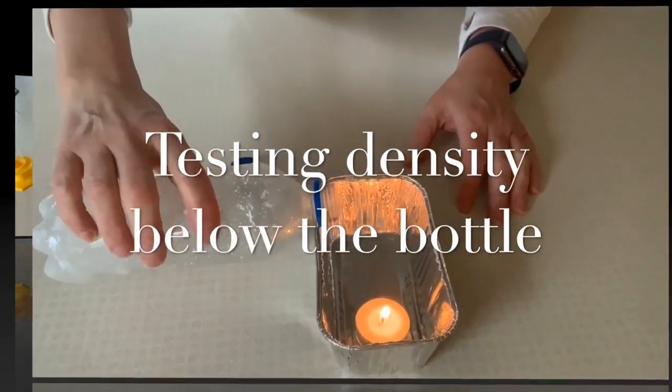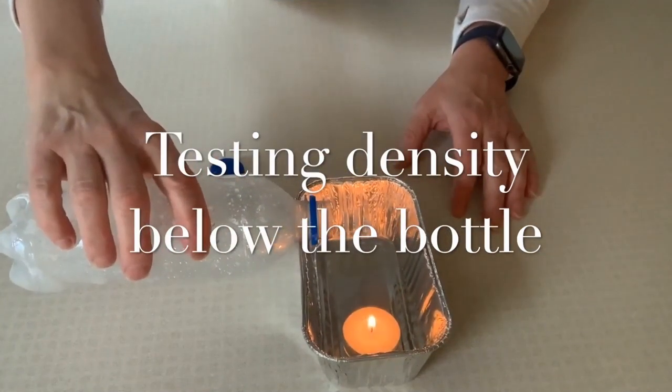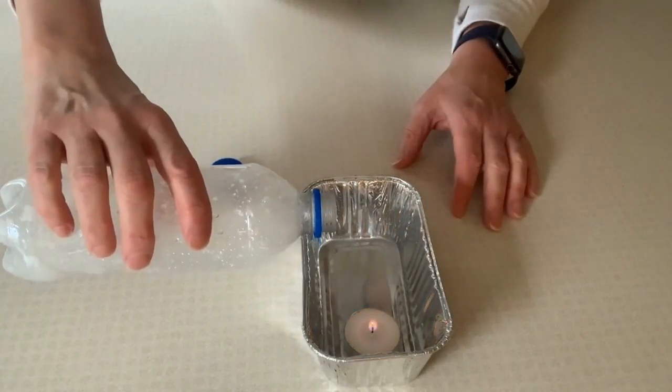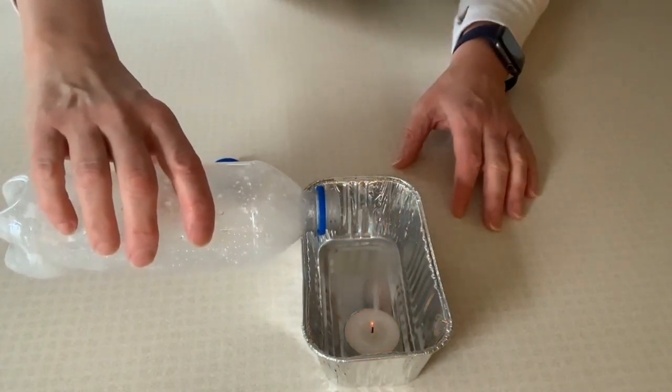Text reads, Testing Density below the Bottle. The scientist tips the open bottle over the lit candle in the metal tin. The candle's flame slowly diminishes until it is extinguished.